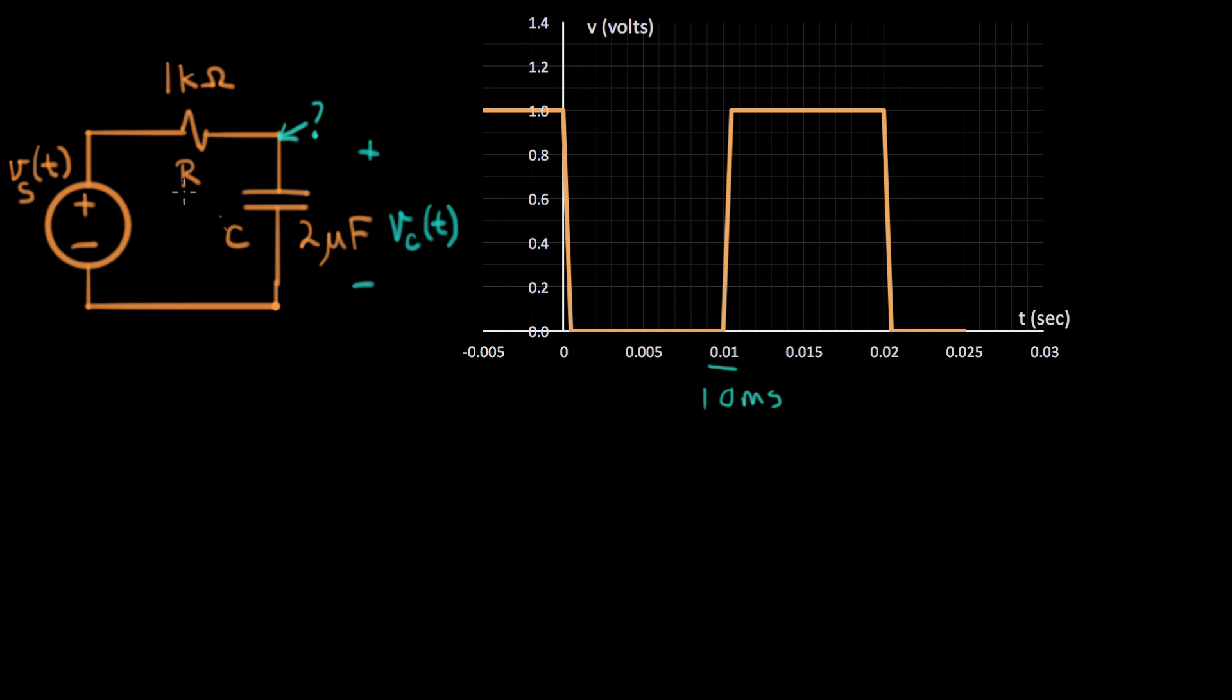So first thing I need to know is what's the RC time constant. So RC equals 1k times two microfarads. And that equals two. K is plus three, micro is minus six. So this is two times ten to the minus three, or two milliseconds. So I can actually go over right here to my chart and I can put a spot right here at two milliseconds.